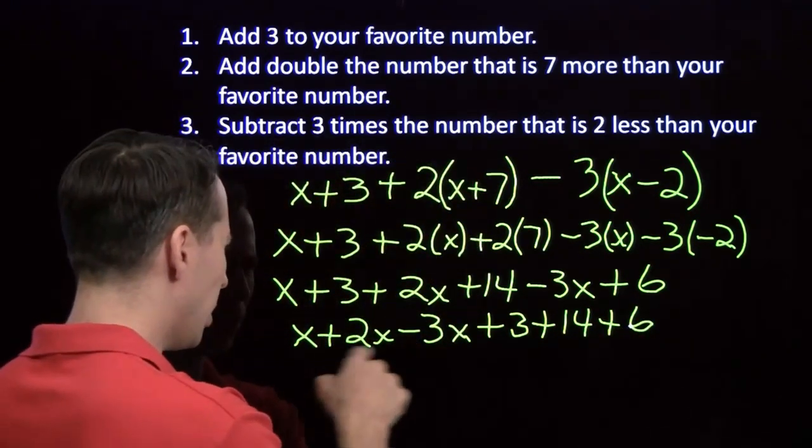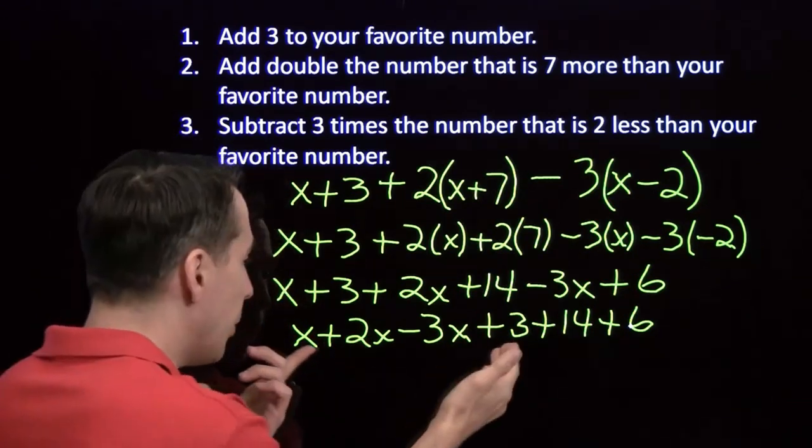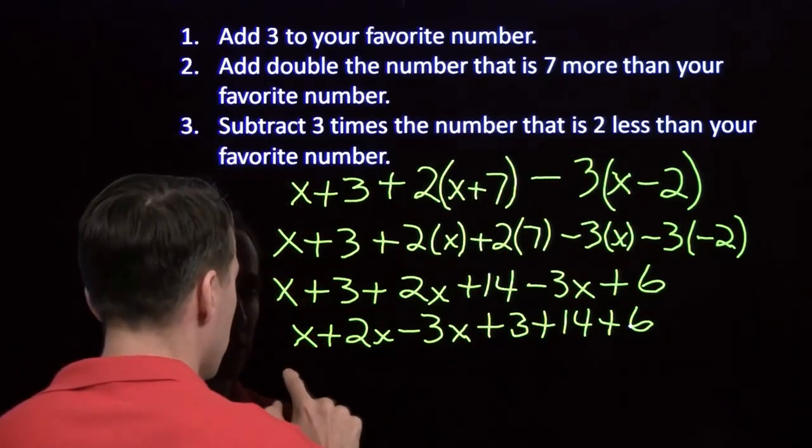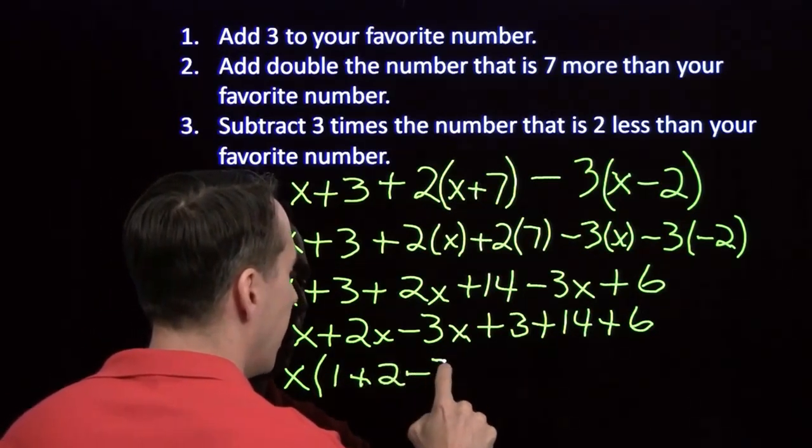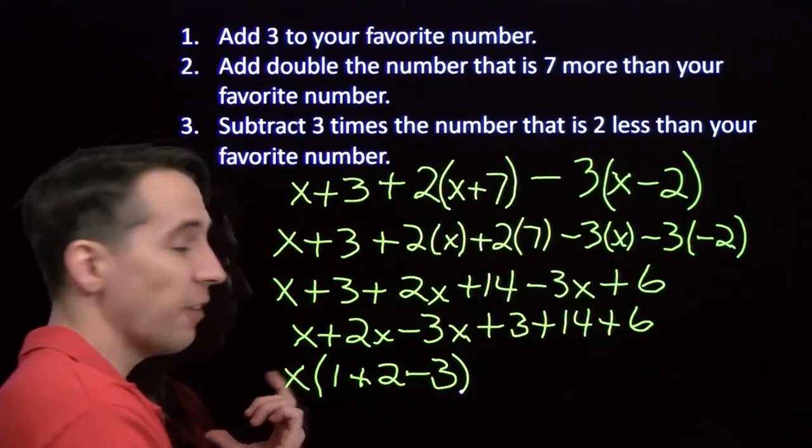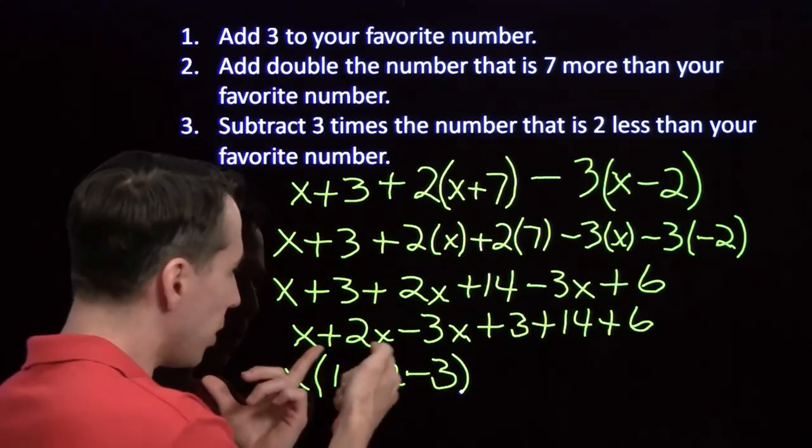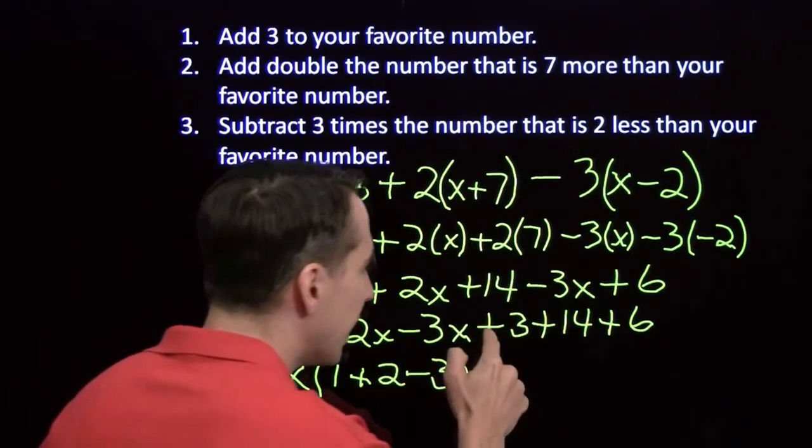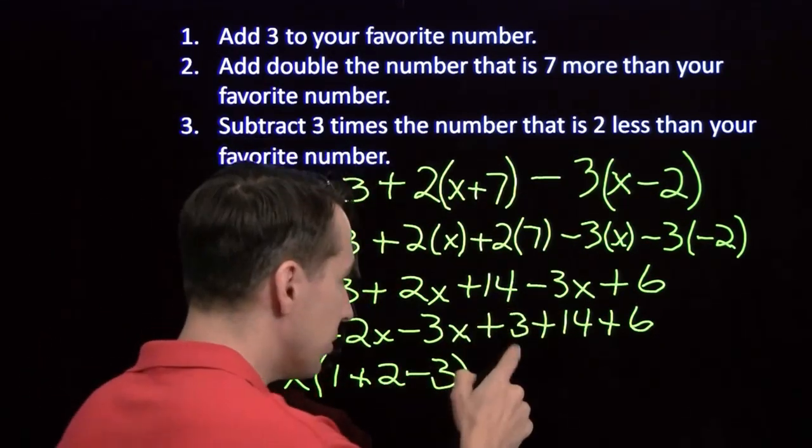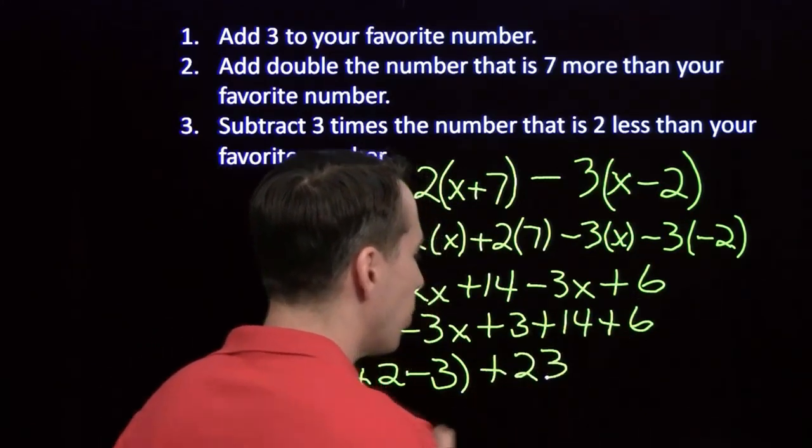So now how can we combine these? Distributive property, again, we can factor out the X. We have X times 1 plus 2 minus 3. All I'm doing here is factoring out the X. X times 1 is X. X times plus 2 is plus 2X. And X times our minus 3 here gives us minus 3X. And then I combine these. 3 plus 14 is 17. 17 plus 6. Aha! There's 23.